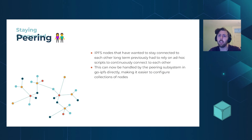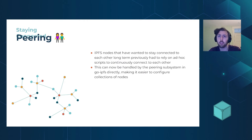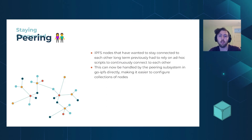We now have a peering configuration where you can specify particular nodes you want to stay connected to. For example, if you run infrastructure nodes and want to ensure your gateway is connected to your cluster or other nodes that need to quickly bitswap with each other, you can add those into the peering configuration and it'll be taken care of for you.